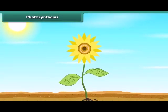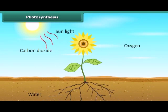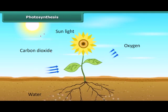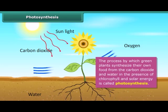As we know that green plants synthesize their own food. But do you also know how they synthesize their own food? Actually, green plants make their own food by the process of photosynthesis. Photosynthesis is a process by which green plants synthesize their own food from the carbon dioxide and water in the presence of chlorophyll and solar energy.